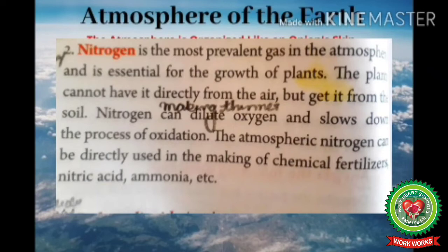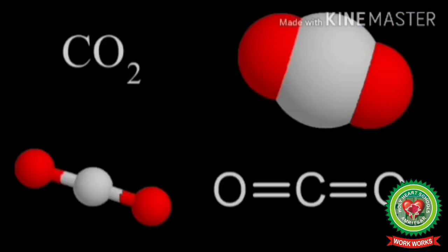Plants cannot take nitrogen directly from the air — they get it from the soil, because it has to undergo a transformation to be used by plants, and this process is known as nitrogen fixation. Nitrogen can dilute — meaning make thinner — oxygen and slows down the process of oxidation when minerals present in rocks react with atmospheric oxygen or that present in rain water, causing decomposition of rocks. The atmospheric nitrogen can be directly used in making chemical fertilizers, nitric acid, and ammonia.